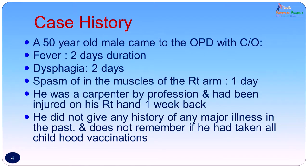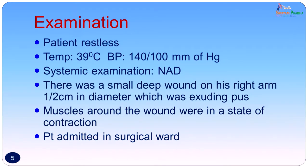A 50-year-old male came to the outpatient department with complaints of fever of 2 days duration, dysphagia of 2 days duration, and spasm in the muscles of the right arm of 1 day duration. He was a carpenter by profession and had been injured on his right hand 1 week back. He gave no history of any major illness in the past and did not remember if he had taken all his childhood vaccinations. On examination the patient was restless, temperature was 39 degrees centigrade, BP was slightly raised at 140/100 mmHg. Systemic examination showed no abnormality. There was a small deep wound on his right arm, half a centimeter in diameter, which was exuding pus, and the muscles around the wound were in a state of contraction.